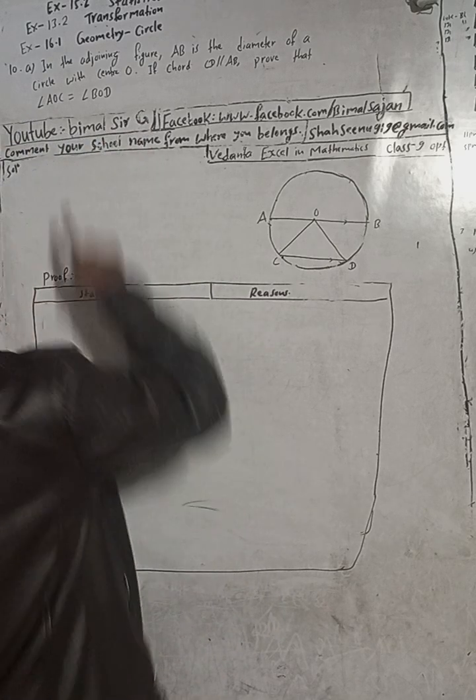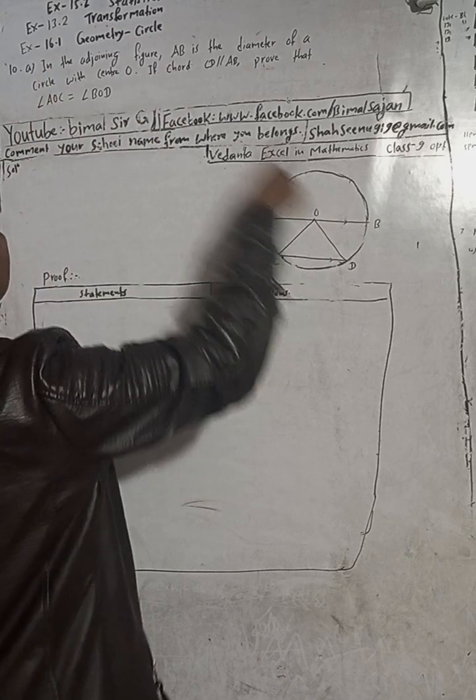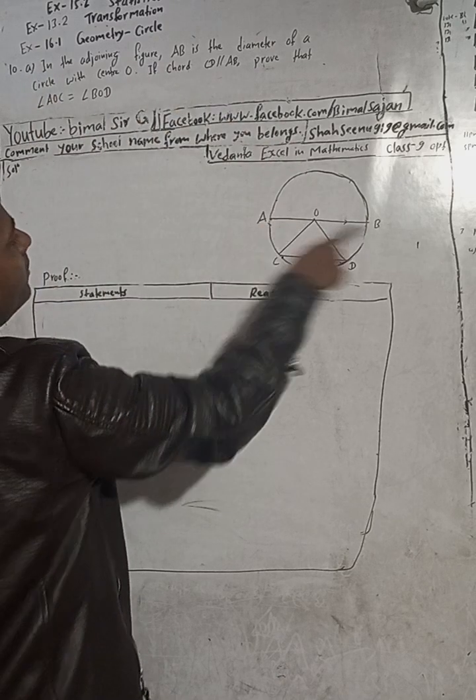Now here the question is 9, 10a. In the adjoining figure, in this figure, AB is the diameter. AB is the diameter.